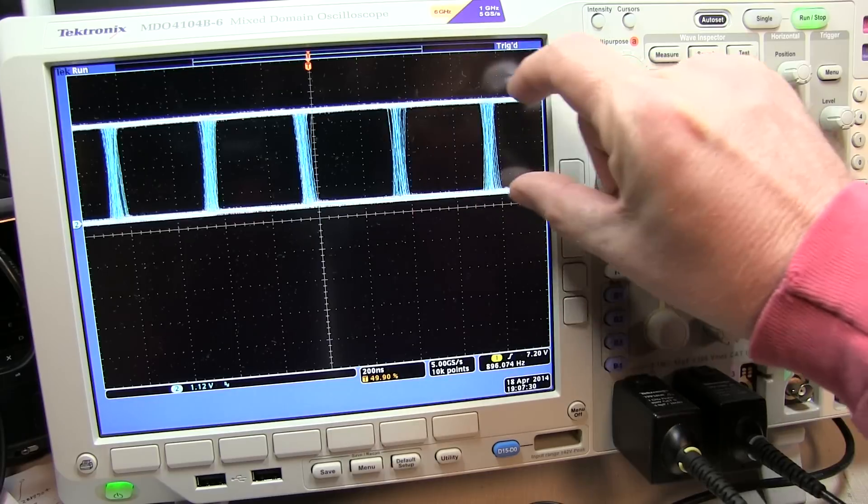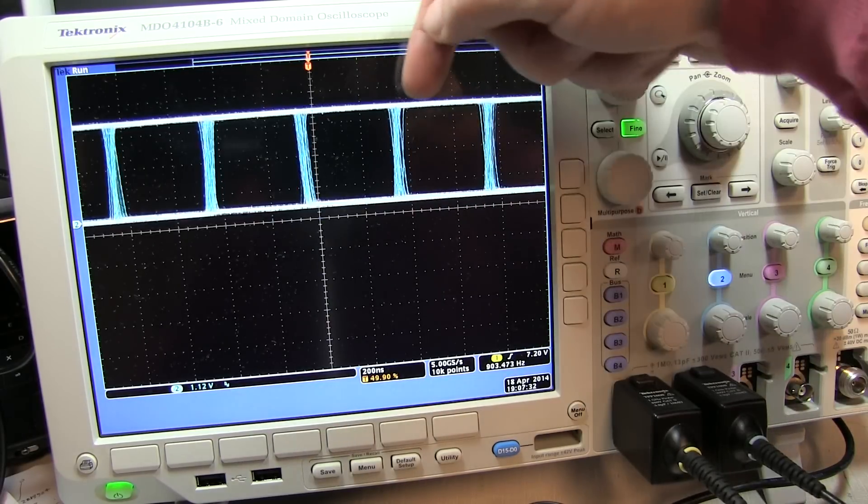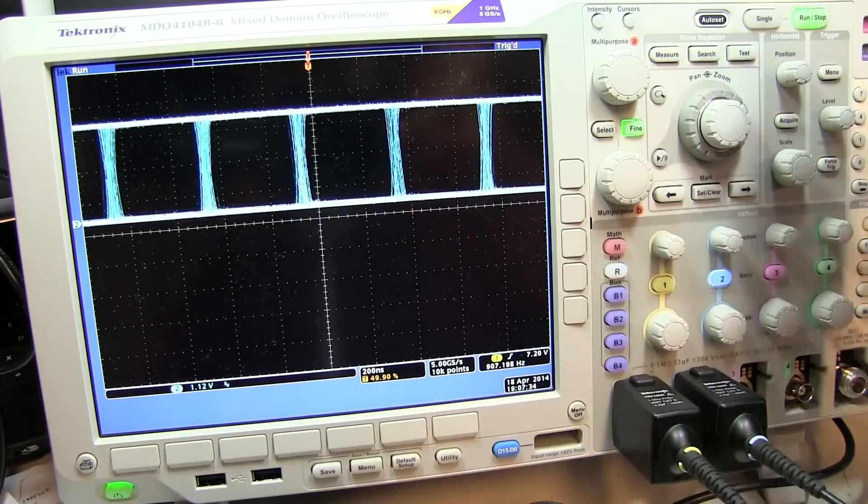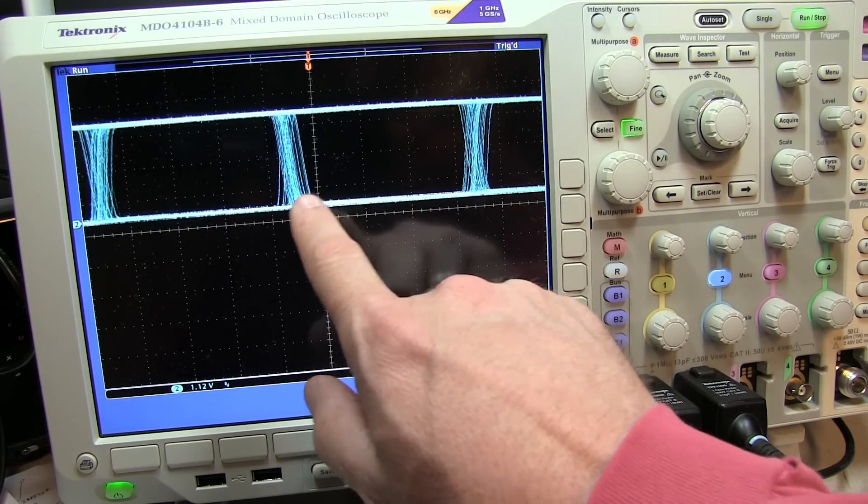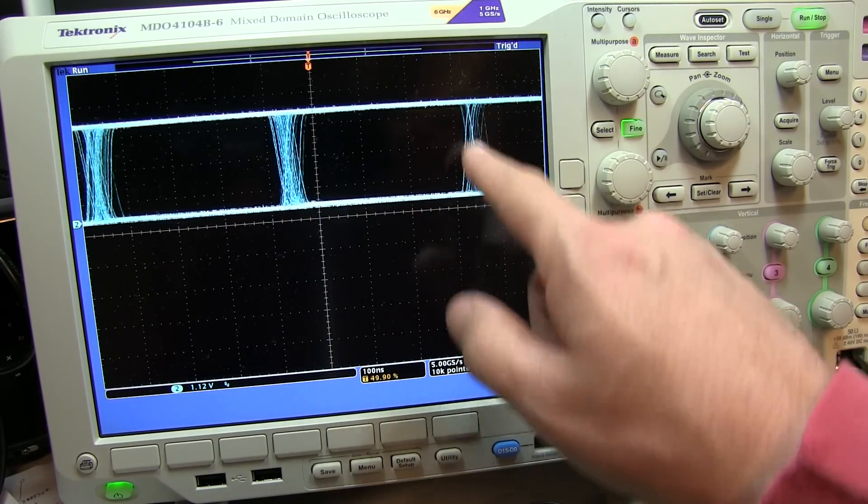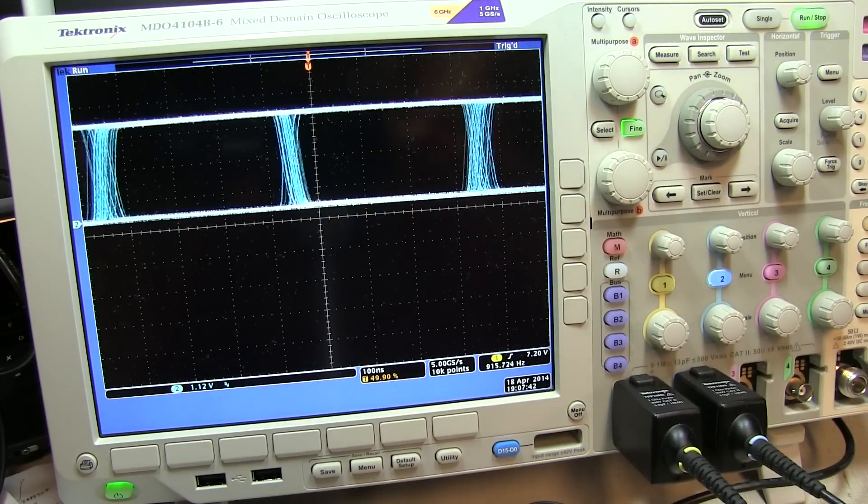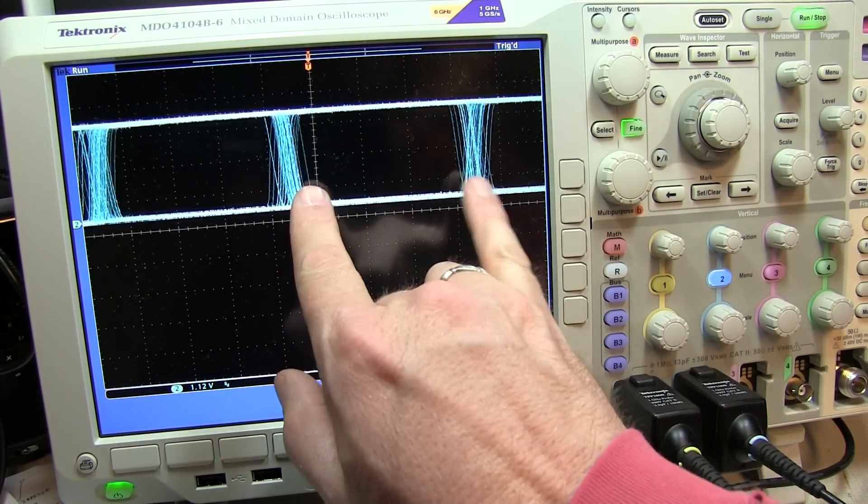I still have nice clean rails, 0 and 1 rails, but my rise and falling edges are now jittering around. If I zoom in a little bit, you can see that a little bit better. These edges are all kind of jittering around instead of being perfectly lined on top of each other. And we call that horizontal eye closure.